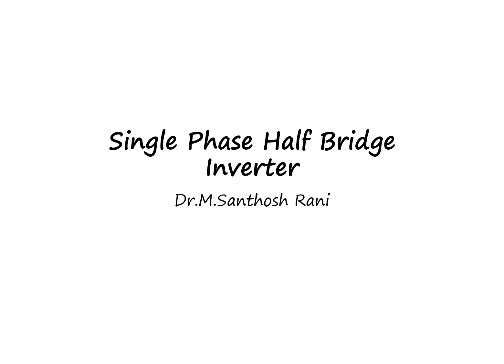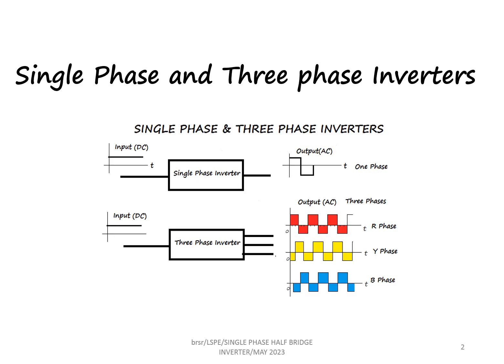In this lecture we are going to see the operation of a single phase half bridge inverter. An inverter is a device which converts input DC voltage into output AC voltage — input is direct current and the output is a bi-directional current. A single phase inverter's output will contain only one bi-directional waveform, whereas a three phase inverter's output will be three waveforms each displaced by 120 degrees.